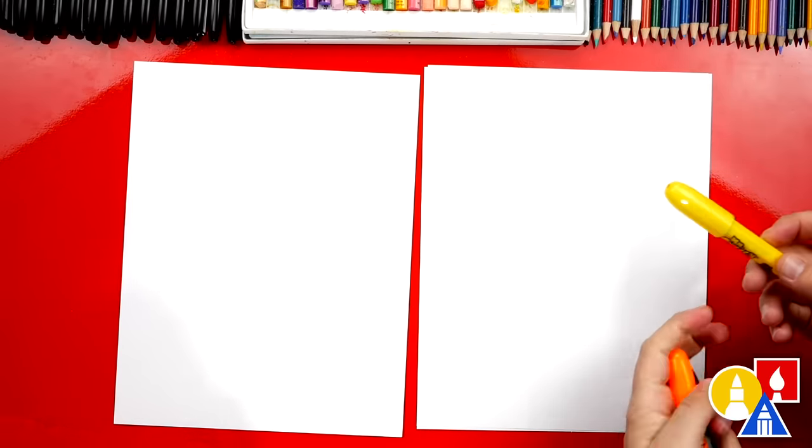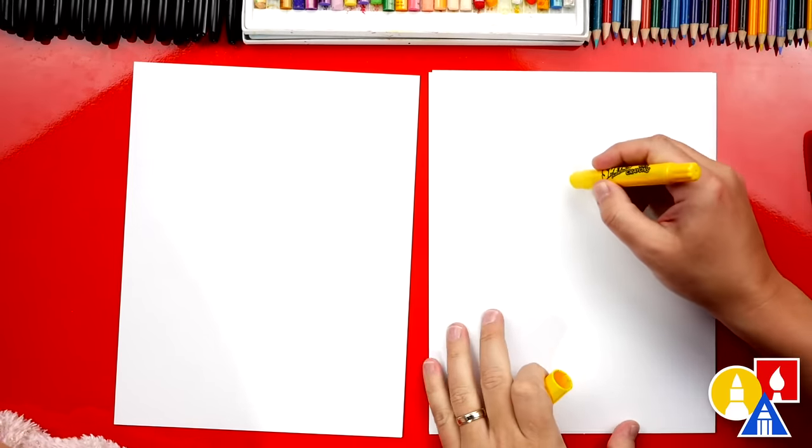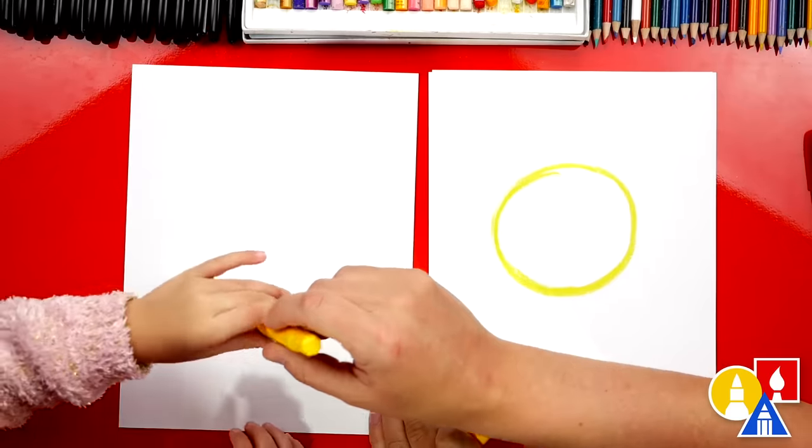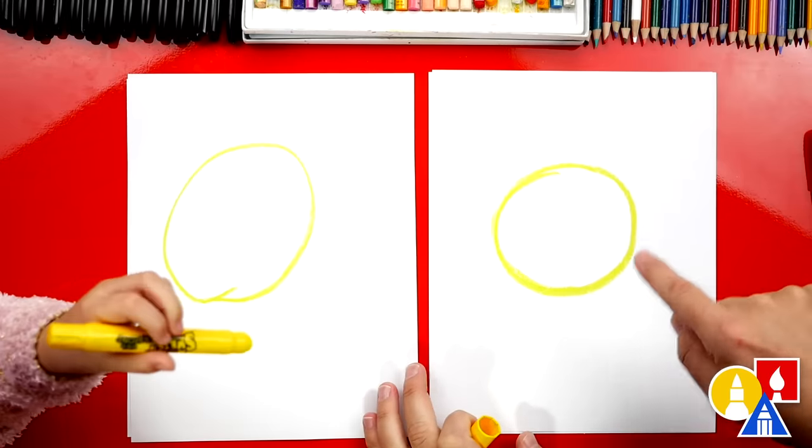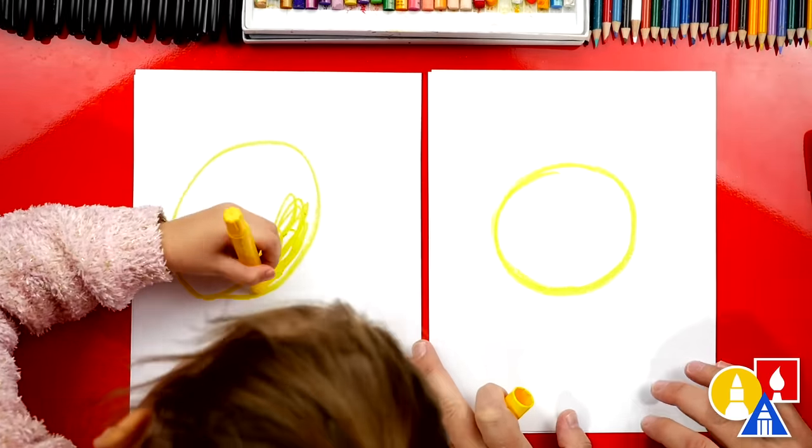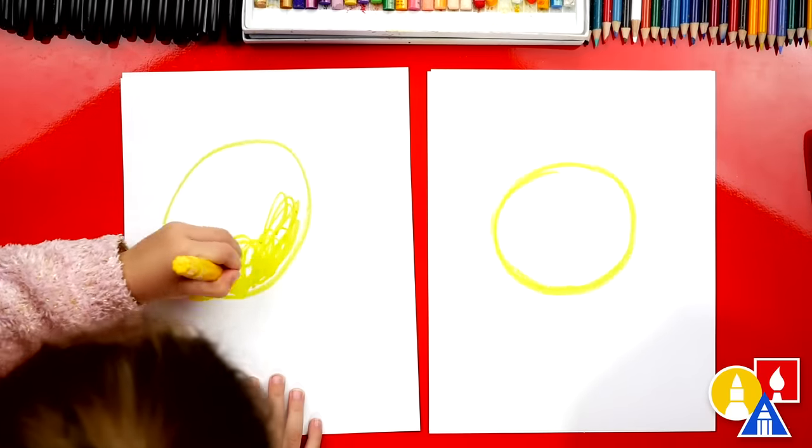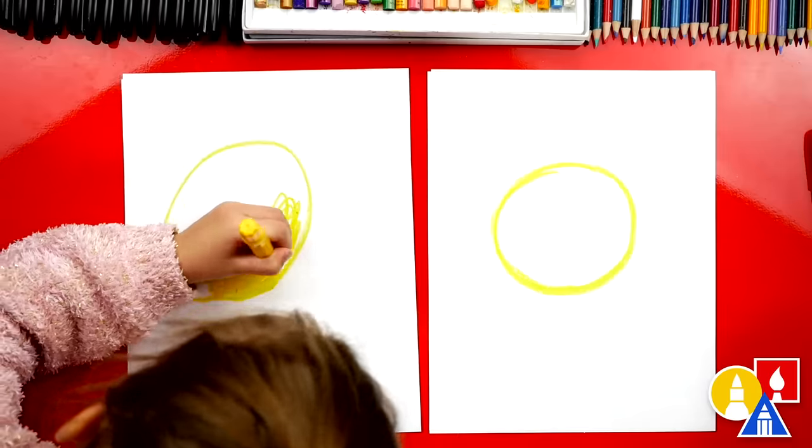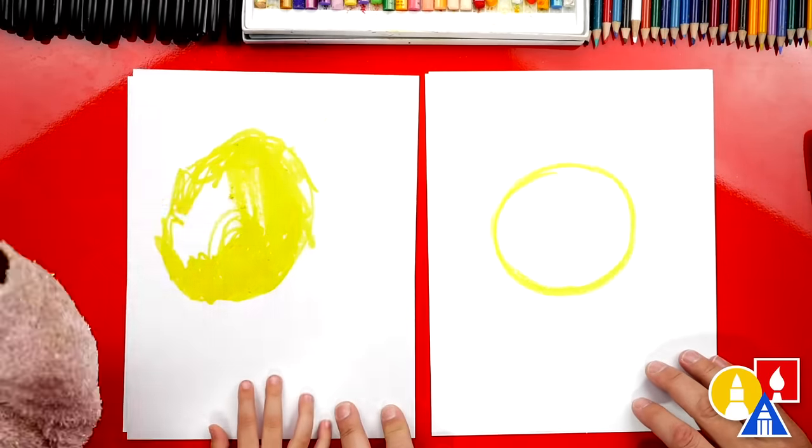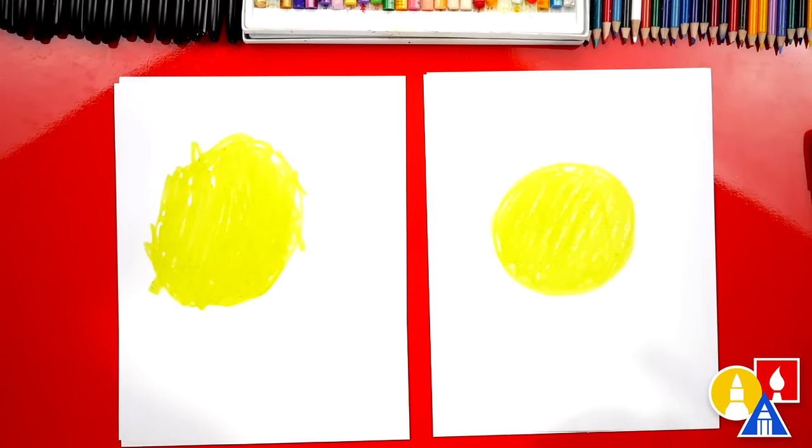We're first going to use our yellow crayon and we're going to draw the head to our tiger. We're going to draw a big circle right in the middle of our paper. And then you can color it in. Do you want to color the circle in? Now this part we're going to speed up because it'll take us a little while to color it in. But if you need extra time to color in your circle, you can pause the video. We have our circle all colored in.